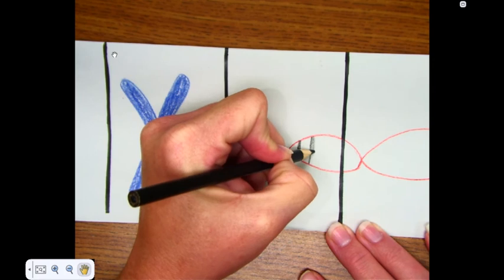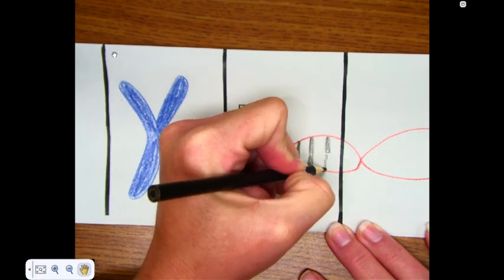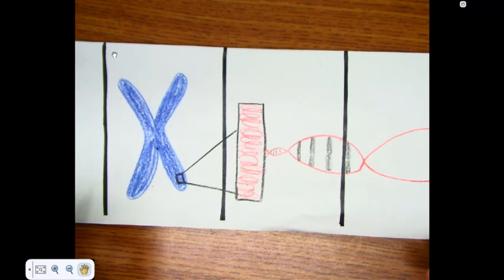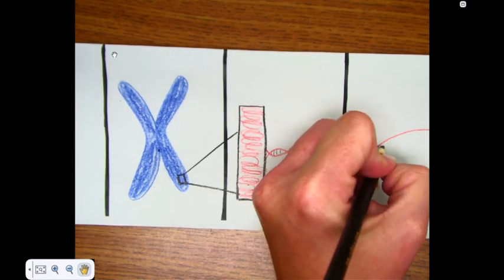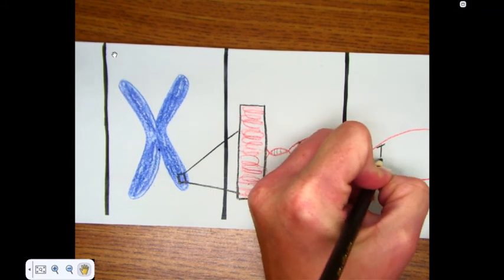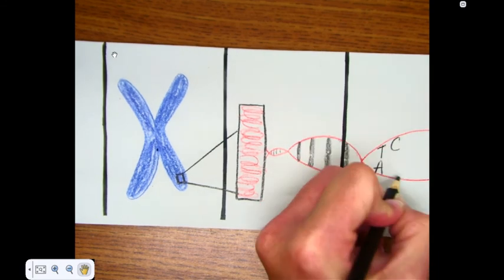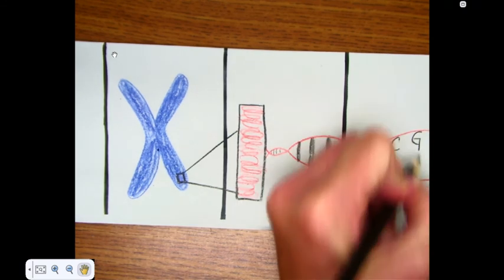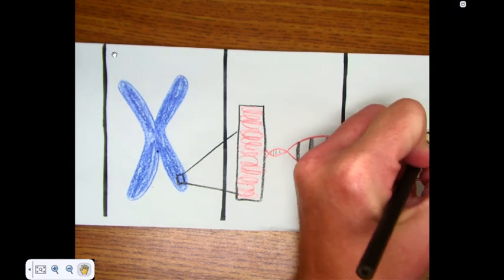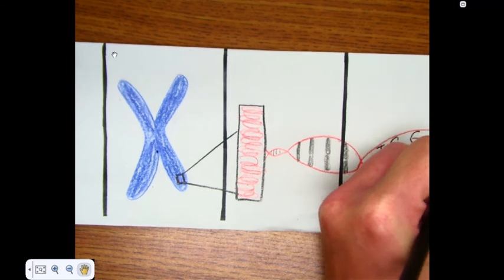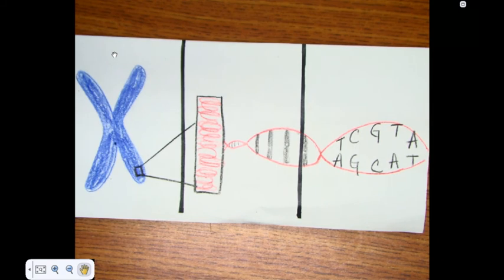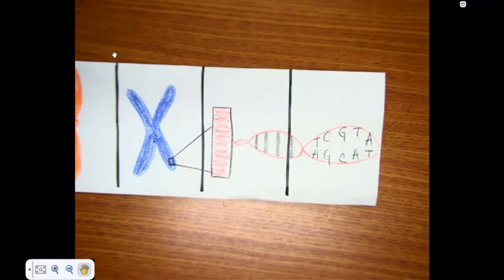You would have seen some of this information on your video that you watched yesterday with Bill Nye. And then we want to match up those bases with these letters. Again, you would have seen this. This is just a review for your notes, and you have a visual of the chromosome pair and a section of that showing the double helix for the DNA.